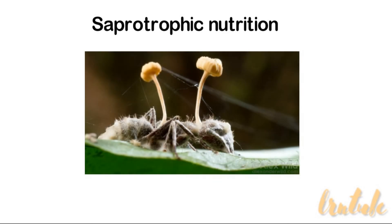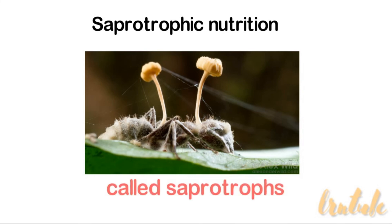Sapotrophic nutrition is when organisms derive their food from dead and decaying organisms. These organisms are called sapotrophs.